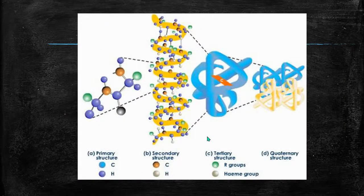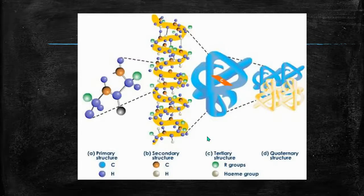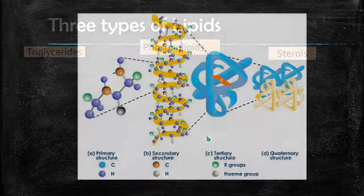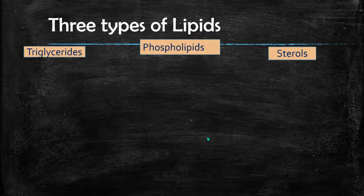Proteins fold up into their overall shape. Proteins are what make up our muscles, our pigments in life. They make enzymes — enzymes are proteins. Our antibodies in our immune system are proteins. We also have proteins in our cell membranes.